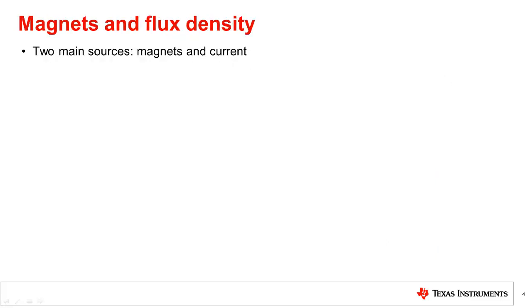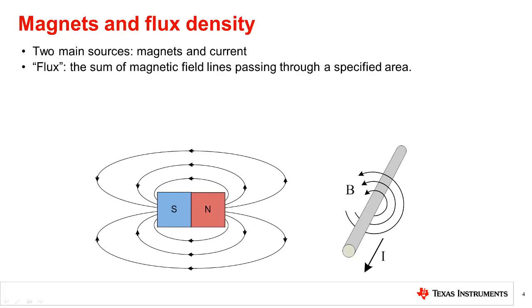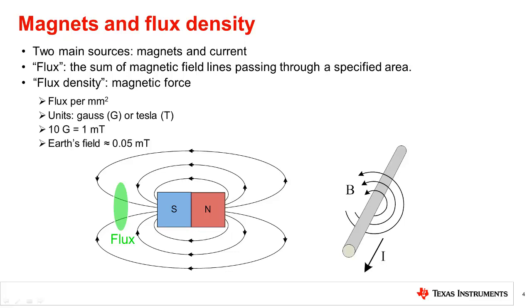There are two main sources that generate magnetic force fields: magnets and current. Magnetic flux refers to the total sum of magnetic field lines passing through a specified area. For example, the region shown in green has some amount of magnetic field passing through it. The unit for this is Weber or Maxwell. As far as Hall sensors are concerned, the sum of total lines isn't important, but rather the flux density. Magnetic flux density is the amount of flux per area. The unit for flux density is Gauss or Tesla. Tesla is the official SI unit, but Gauss is also very commonly used. We usually talk in terms of millitesla for values involved here, and 10 Gauss is equal to 1 millitesla.